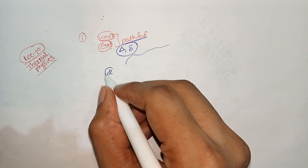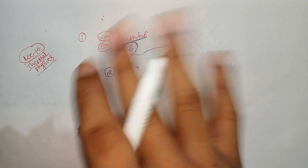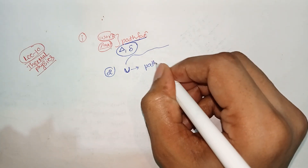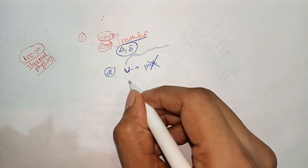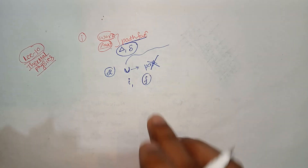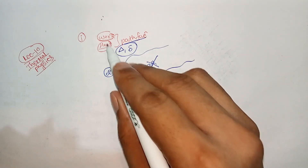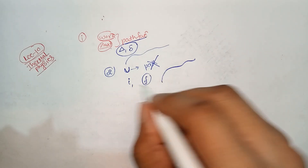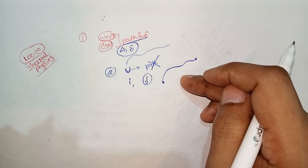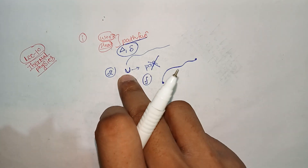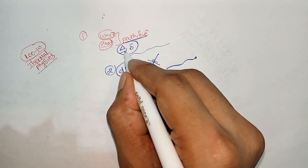But if we talk about internal energy, internal energy does not depend on the path. Rather, internal energy depends on the initial and final state. So we use the differential parameter 'D' to denote internal energy, and delta or partial sign to denote work or heat.